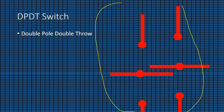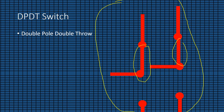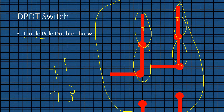Let's see the animation. The poles are now down and now the poles will go up. As you are seeing, these poles are touching this throw. This is a throw, and this is also a throw. As you can see there are four throws and two poles. So why is the DPDT switch named double pole and double throw? It is double pole, yes, but why is there double throw? There are actually four throws.